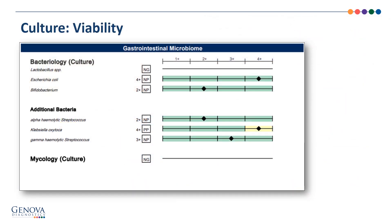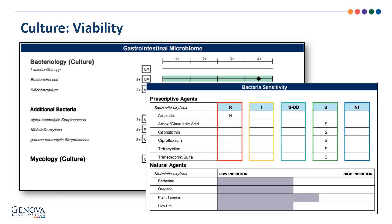On the next page we see the culture results. A culture is run on every stool sample, and whatever grows out is what is reported on the test. Genova runs a culture looking for bacteria and yeast. Additionally, if a pathogen or potential pathogen is present, sensitivities will be run using both prescriptive and natural agents to see what would work best for that patient's particular organism. Anything in the R category would not work — it's resistant — and anything in the S category would work — it's sensitive.